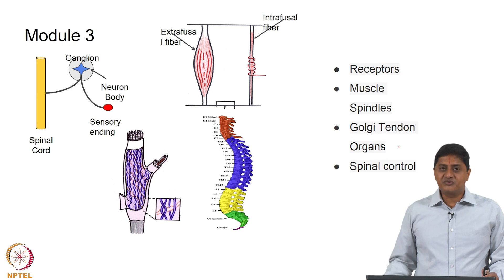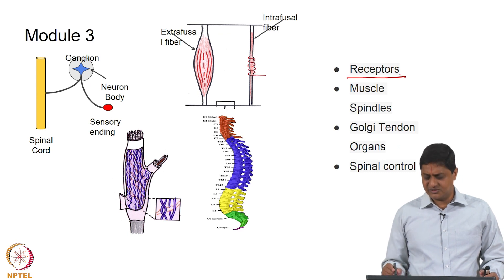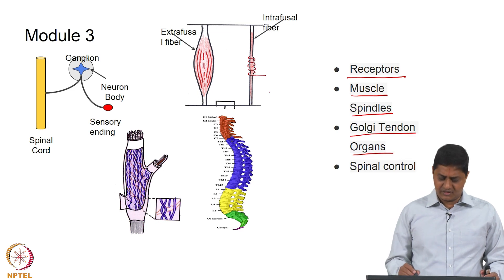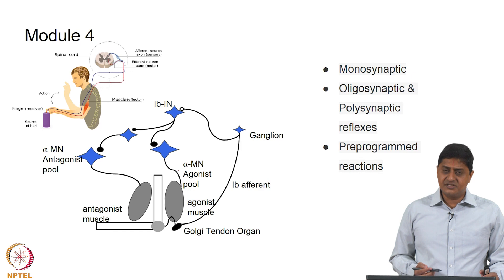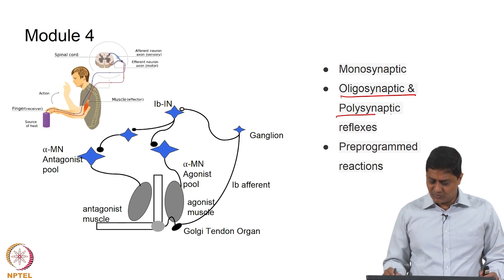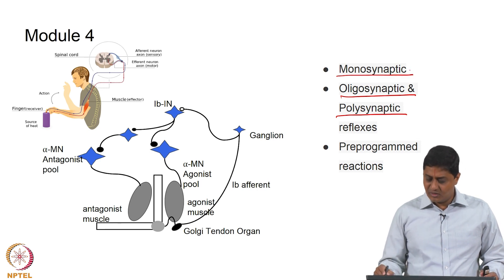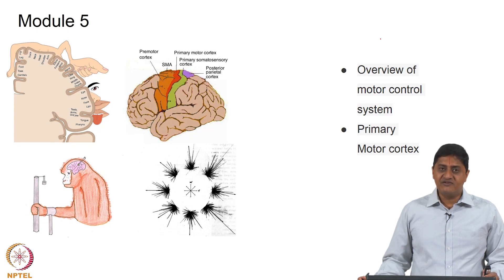In module 3 we will talk about spinal processes, specifically proprioceptors — a specific kind of receptor. Examples of these are muscle spindles and Golgi tendon organs. In module 4 we are interested in other spinal processes and reflexes. An example given is an oligosynaptic 1B reflex, but we will also be discussing monosynaptic reflexes including the H reflex, as well as preprogrammed or triggered reactions.